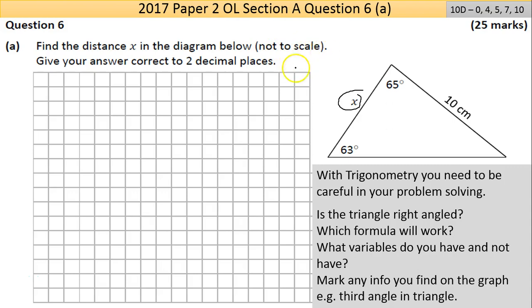The angles are 63° and 65°. Straight away you can get this angle here by adding 65 and 63 to get 128, then take that from 180. Using the calculator, 180 minus 128 is 52°.